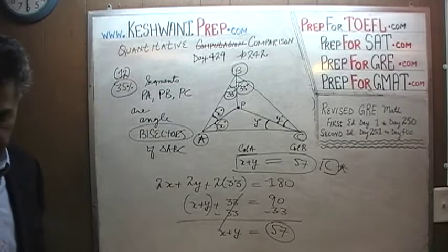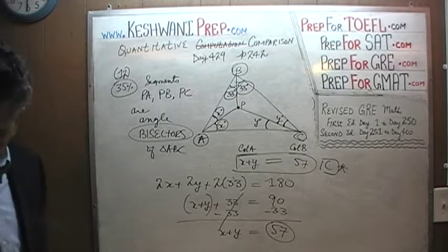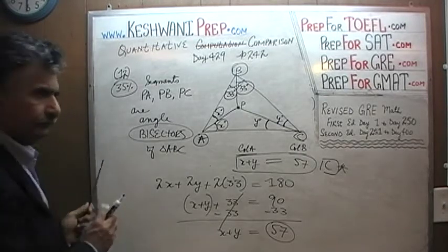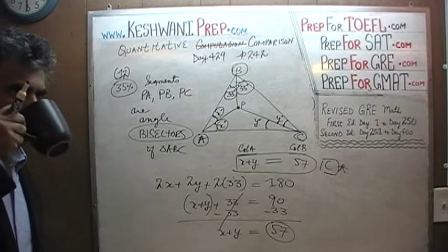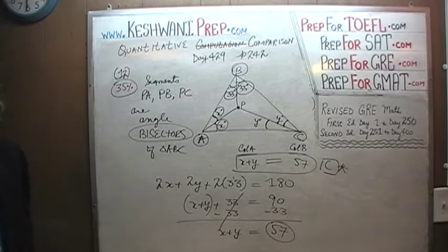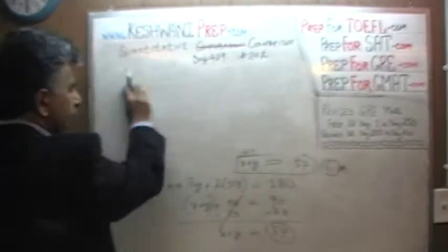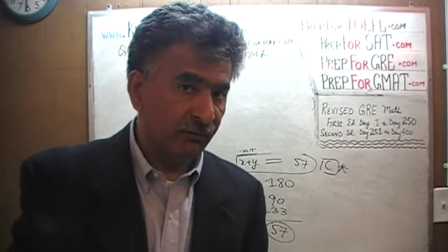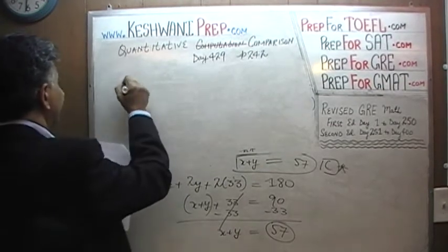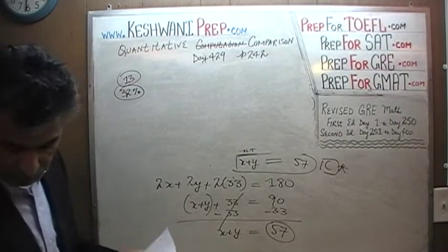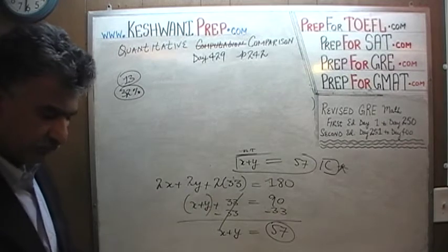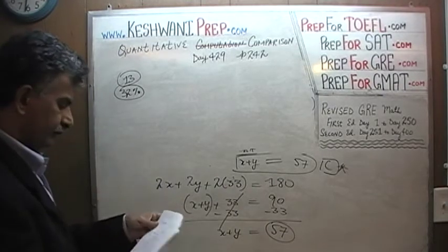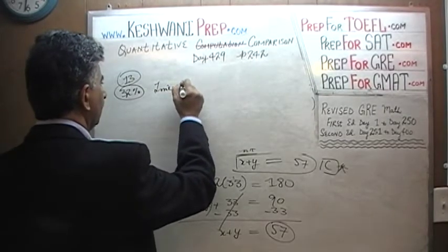Let's go on to the next one — number 13. Problem number 13 is also a geometry question. When it appeared in the exam, 32% of people got it right, compared to 35% on the previous problem.